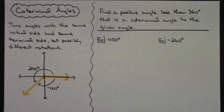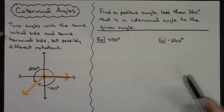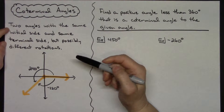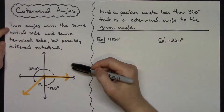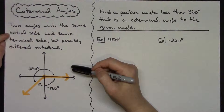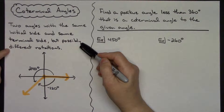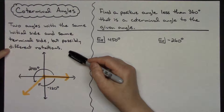In this video I'm going to be taking a look at co-terminal angles. Here on the left I have a definition: two angles with the same initial side and same terminal side but possibly different rotations.